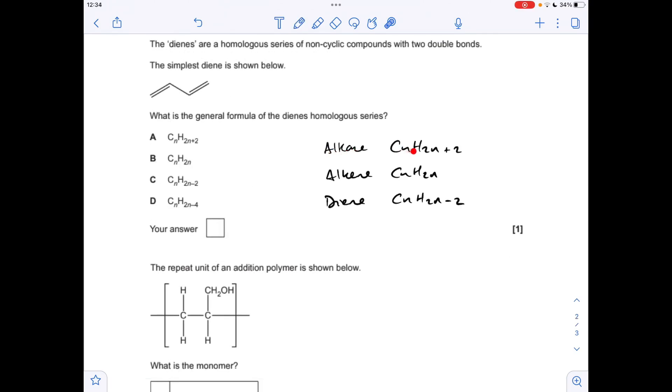Next one. What's the general formula of the dienes? Alkanes: CnH2n+2. Alkenes: we lose the plus 2 because of the double bond, so it's CnH2n. Therefore, a diene with its extra double bond, we need to lose another two, so it's going to be CnH2n-2. So the answer this time is C.